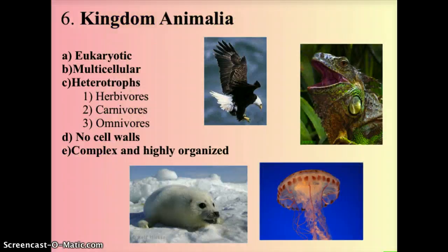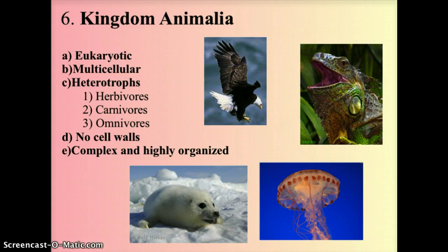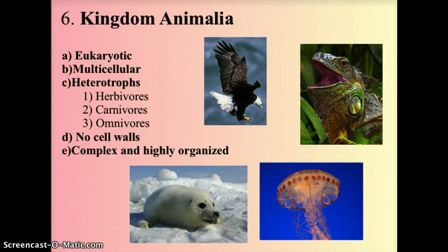The last kingdom is Animalia. Animals are eukaryotic, meaning they have an organized nucleus, and multicellular — more than one cell in their makeup. They are heterotrophs and can be herbivores feeding on plants, carnivores feeding on the muscle tissue of other organisms, or omnivores eating both plants and animals. They have no cell walls and are the most complex and highly organized of all living organisms.